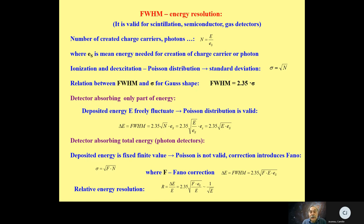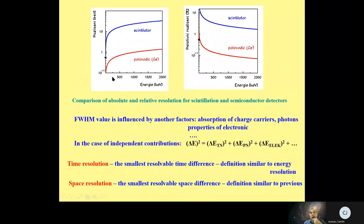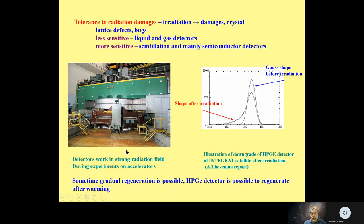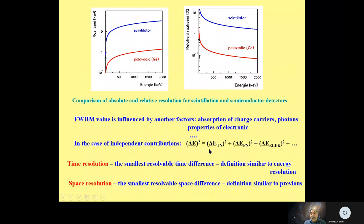It is possible to see from a plot that the relative energy resolution value becomes smaller — meaning resolution gets better — as energy increases. This is shown for both semiconductor detectors (germanium) and scintillation detectors, where the semiconductor clearly has better resolution than the scintillator.